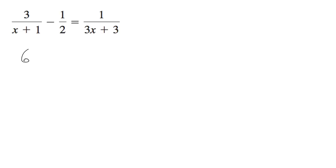Well, I'll do it like this: 2 quantity 3 minus 1 times quantity x plus 1, all over 2x plus 1. This is going to be equal to 1 over 3x plus 3.